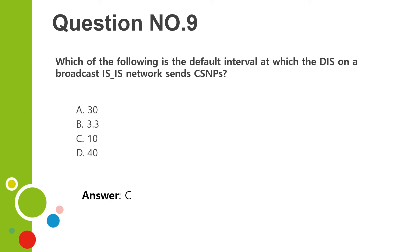Question number nine. Which of the following is the default interval at which the DIS on a broadcast network sends CSNPs? A. 30. B. 3. C. 10. D. 40. Answer: C.